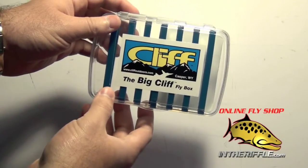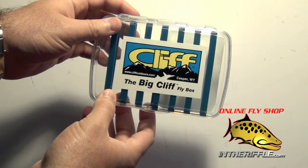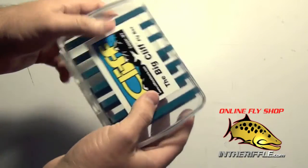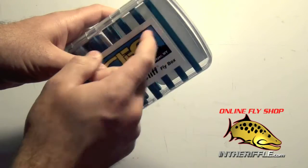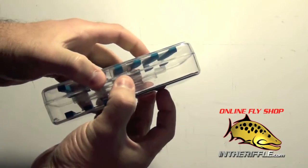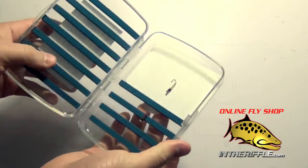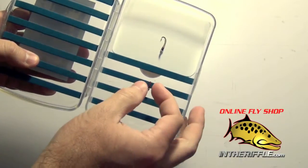Here we're going to take a look at the Big Cliff Fly Box from Cliff Fly Boxes. It's a nice heavy-duty box with thick plastic and a solid latch. You have foam strips here where you can stick all your flies.